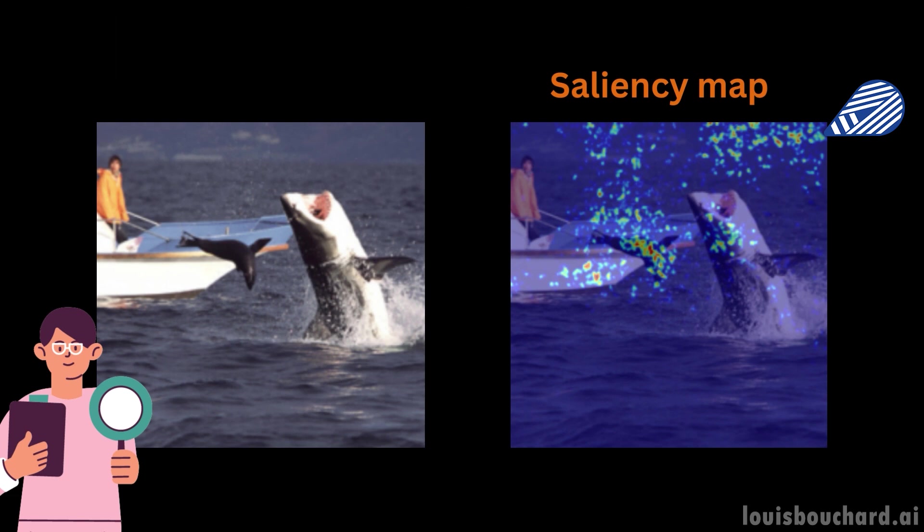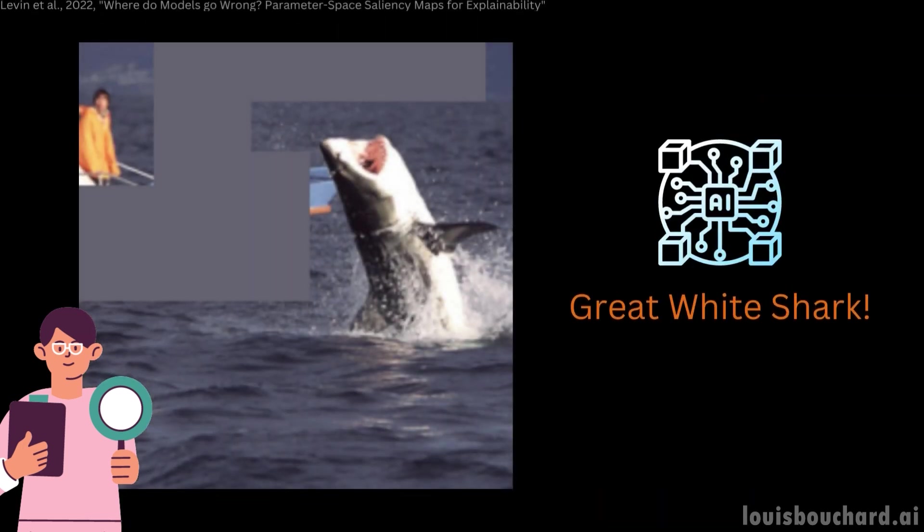The top right corner with the water confidently identified a killer shark. If we hide it from the image and rerun the model, we now see the correct grey-white shark identified. I don't know the two species enough to say if this is a grave mistake or not, but you can see how a model can confidently fail thanks to image features that aren't relevant at all.